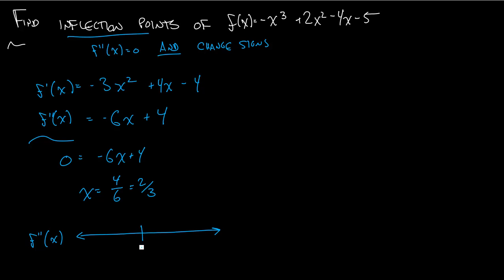And I'll say, all right, at 2 thirds, what happens at 2 thirds? Well, f double prime of x is 0 there. Now, what happens when it's greater than 2 thirds? Let's plug in something that's greater than 2 thirds into this formula. Let's plug in 1. So we have negative 6 times 1 plus 4 equals negative 2. That's a negative number. And you actually know that everything over here will be a negative number. So I'm just going to mark this as negative.